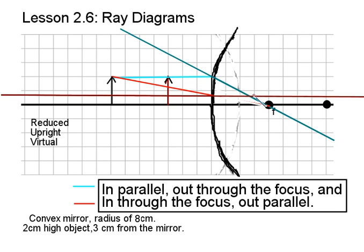Well, where those reflected rays cross, right here, that's the top of our object. What kind of image do we get? Well, it's clearly shorter than the original, so it's reduced. It's right side up, so it's an upright image. And it's behind the mirror, so it's virtual.